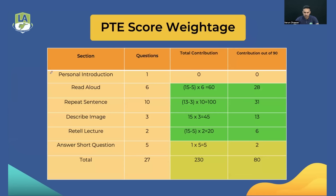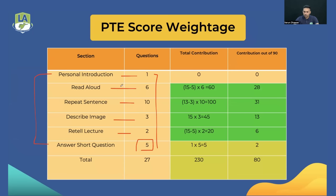Now let's look at speaking. There are six question types: around one Personal Introduction, six Read Alouds, 10 to 11 Repeat Sentences, two to three Describe Images, one to two Re-tell Lectures, and five to six Answer Short Questions. For Read Aloud, you get five points in fluency, five in pronunciation, and five in content — totalling 15 points per question, of which 10 go into speaking and five go into reading.